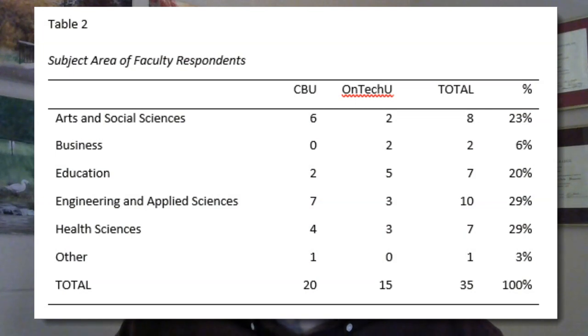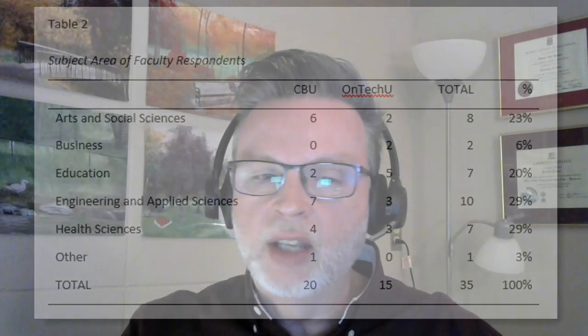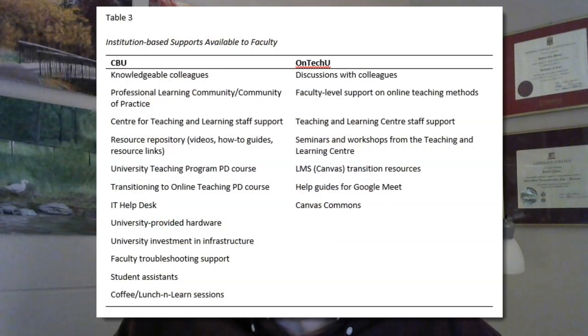Here are some examples of what we found. In this particular table, we're presenting just raw demographic data from the survey that we conducted — how many faculty responded to the survey from each university and what was their demographic breakdown based on their area of specialization. Here's another table of data from our survey — simply a list based on survey responses of the types of supports that faculty said were available to them during the pandemic.